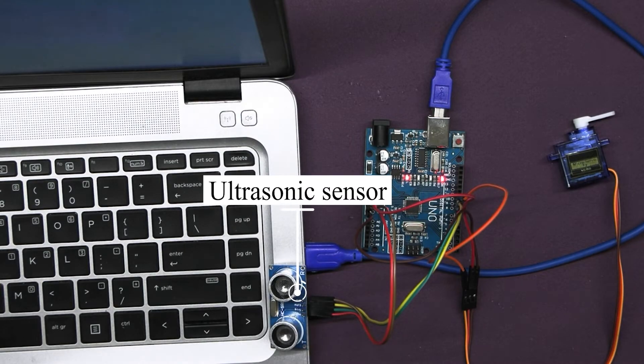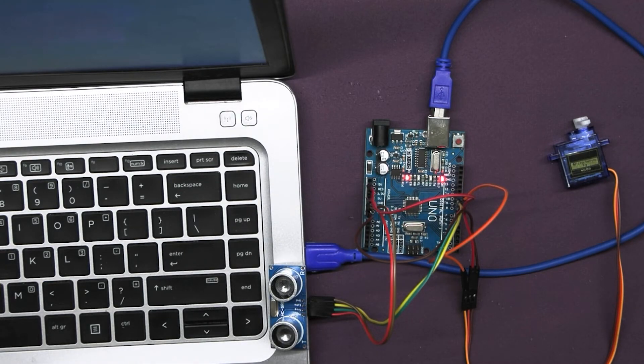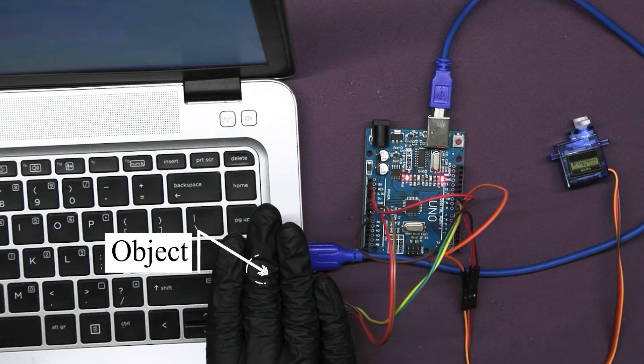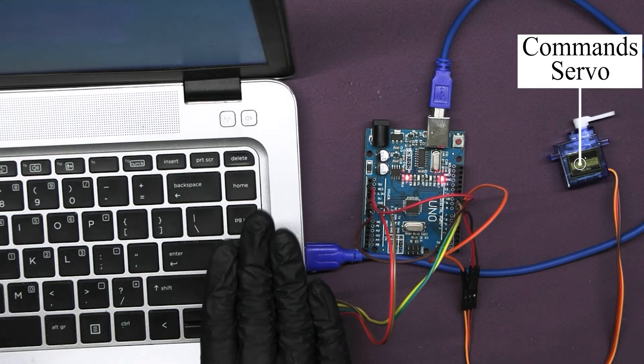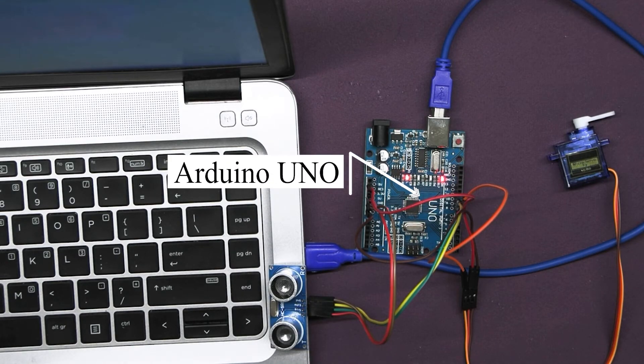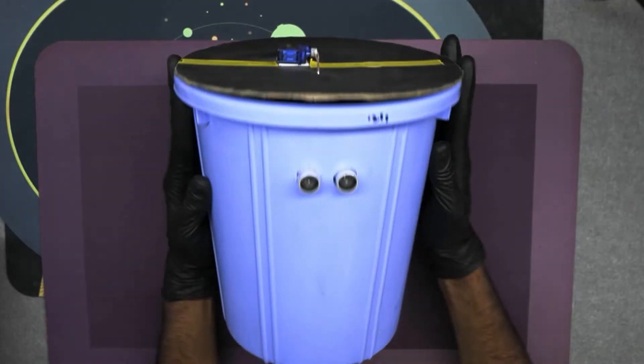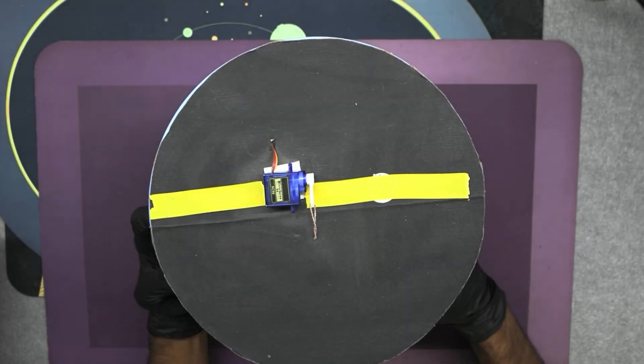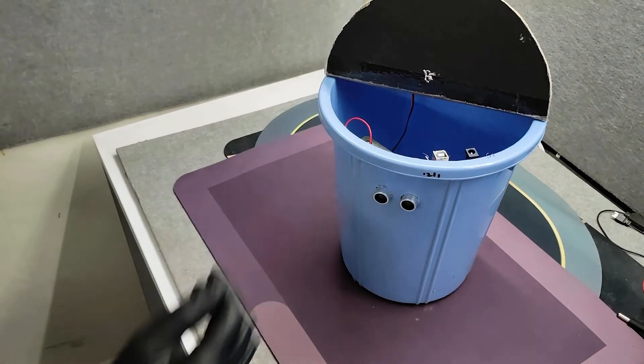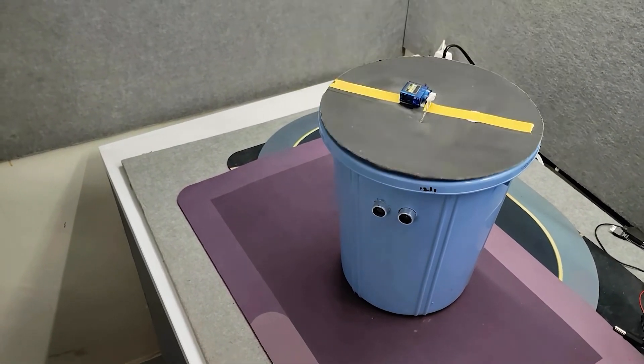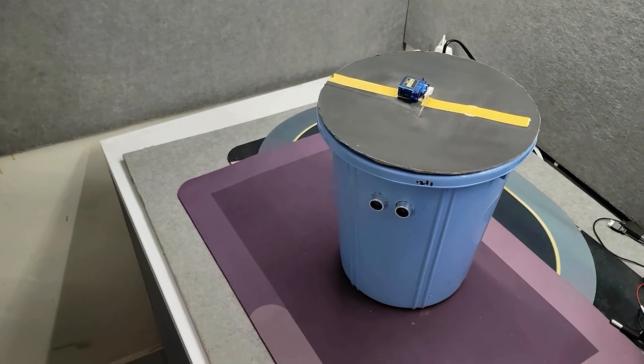When the sensor detects an object within 20 centimeters as we have programmed it, it sends a signal to the Arduino. The Arduino then commands the servo motor to rotate 90 degrees, basically to open the lid of the dustbin. After one second delay to allow time to deposit the trash, the servo motor rotates back to zero degrees, closing the lid automatically. So this will be the way our smart dustbin works.